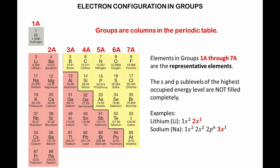Groups are columns in the periodic table. Elements in groups 1A through 7A are the representative elements. The S and P sublevels of the highest occupied energy level are not filled completely. Let's look at a couple of examples. Lithium has a 2S sublevel that is not completely filled, only one electron. The same for sodium. There is only one electron in the sublevel with the highest energy.